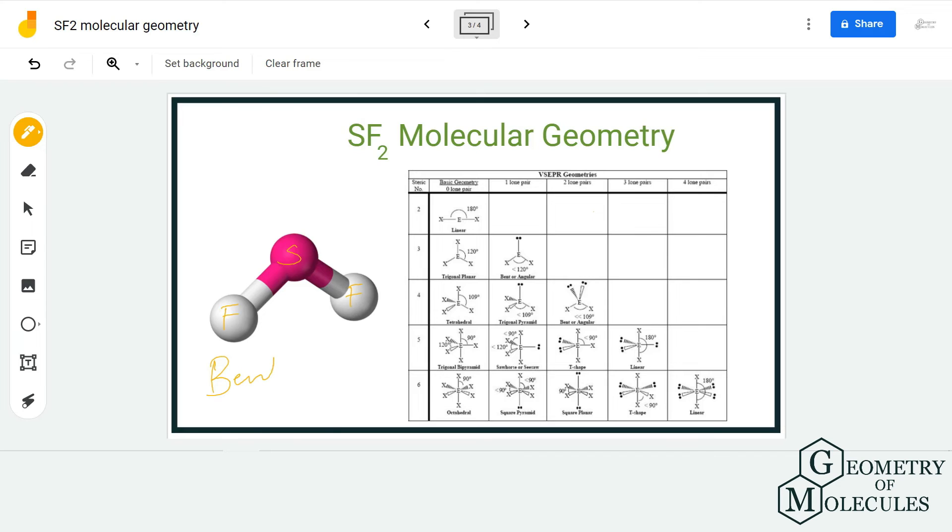Using this table, we will see if the molecular geometry is actually bent. So the steric number of SF2 will be 4, because the sulfur atom has two lone pairs and there are two bonding pairs. So the steric number will be 4 for sulfur in SF2. Using this table, you can see that the molecules that have a steric number of 4 and have two lone pairs have bent or angular molecular geometry.